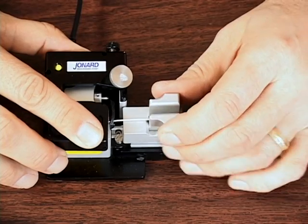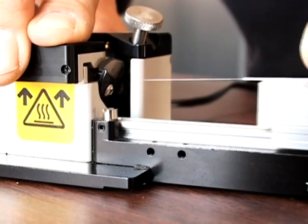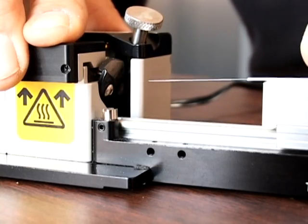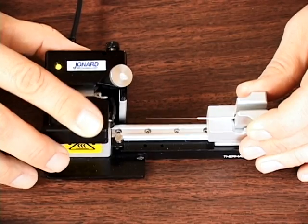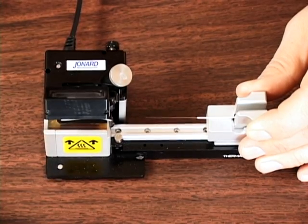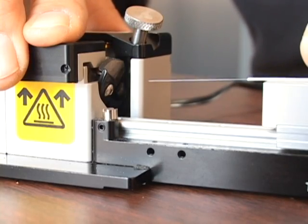Continue to hold the blades closed while you slide the fiber holder and platform away from the heating element. Release the lid and remove the fiber. The fiber is now ready to be cleaned, cleaved, and spliced.